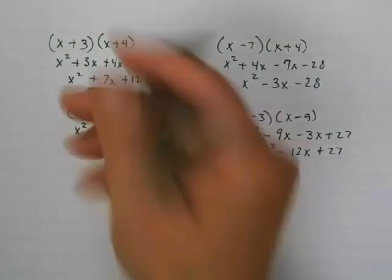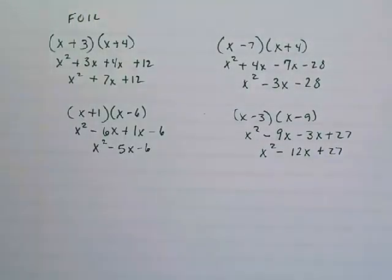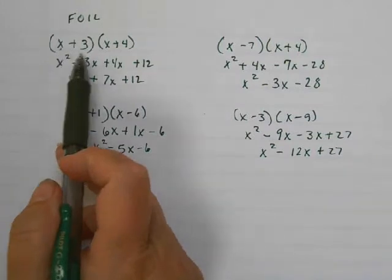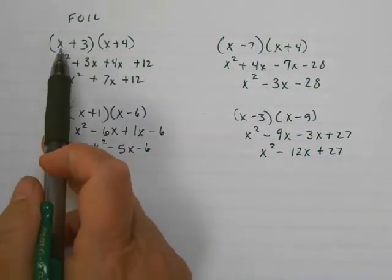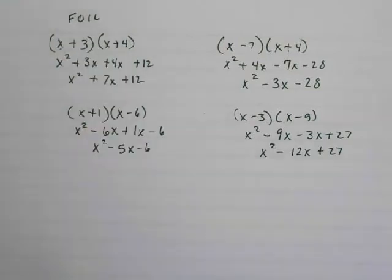And most of them would use what's called the FOIL method. Other teachers call it the double distribute, where they multiply this times this and get that, this times this gives me this, this times this gives me this, and so on. So after the students would multiply these out and put them on the board, I would ask them to start looking at the problem, and that's what I want you to do.